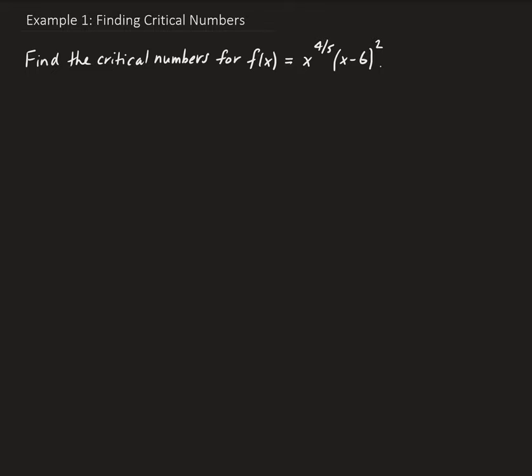In this example, we want to find the critical numbers for the function f(x) = x^(4/5) times (x minus 6) squared. Critical numbers occur where the derivative is equal to zero, or where the derivative of the function is not defined.